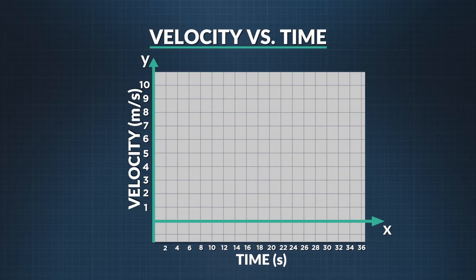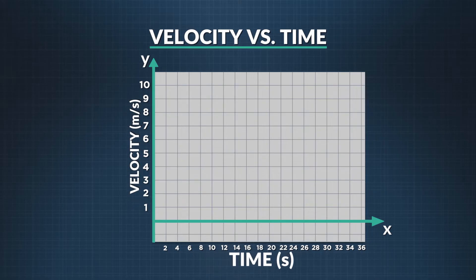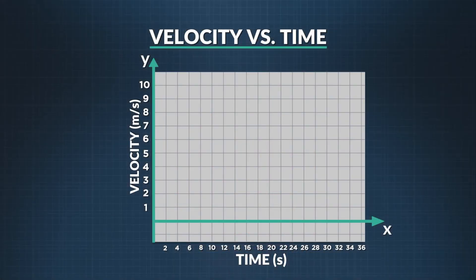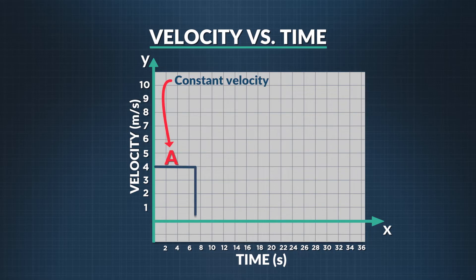So that's motion on a position versus time graph. Now let's look at motion using a velocity versus time graph. In this kind of graph, velocity is on the y-axis, measured in meters per second, and time is on the x-axis, measured in seconds. Let's take the data from the position versus time graph and plot it on the velocity versus time graph to see how her velocity has changed over time. At A, Summer was moving at a constant velocity, so let's graph that first. Between time 0 and 7 seconds, we draw a horizontal line showing Summer's velocity.